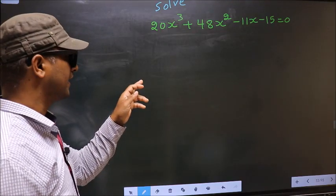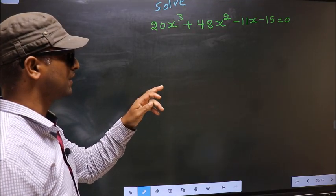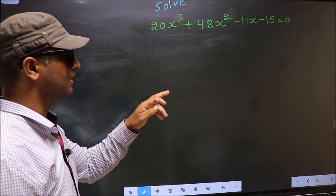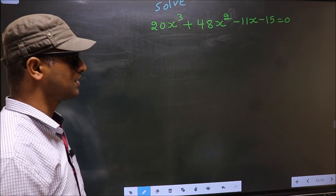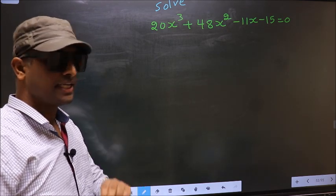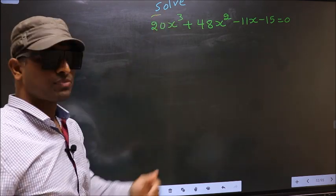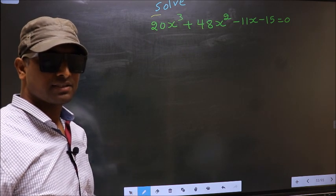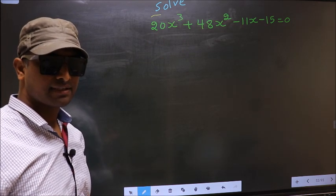Solve 20x³ + 48x² - 11x - 15 = 0. They told us to solve, which means we should get the values of x.